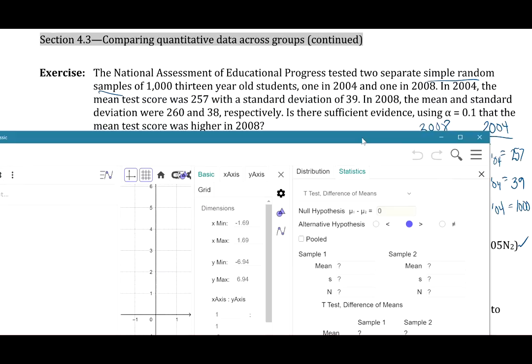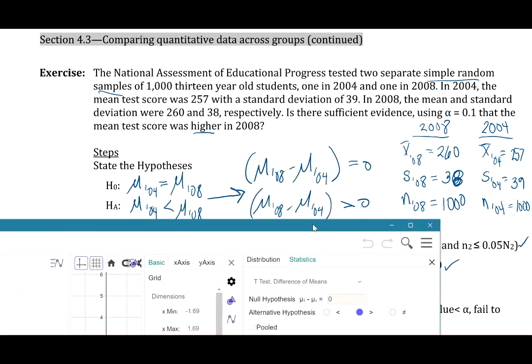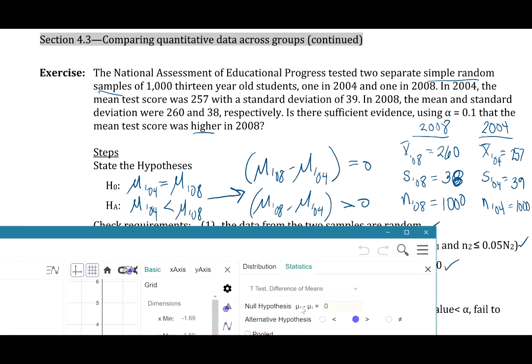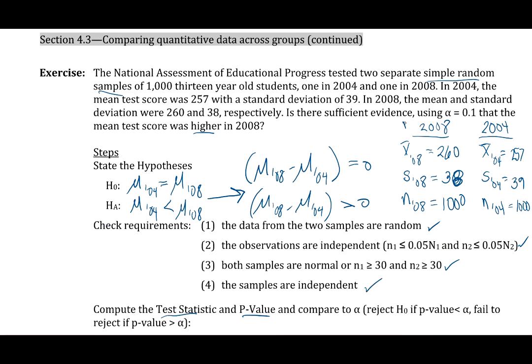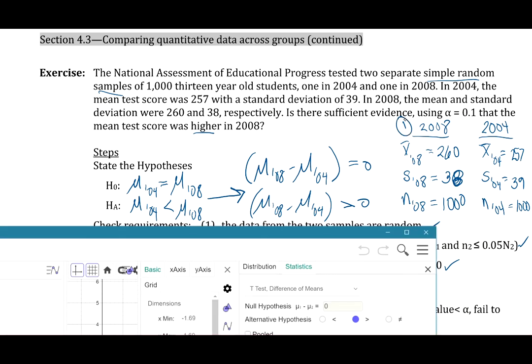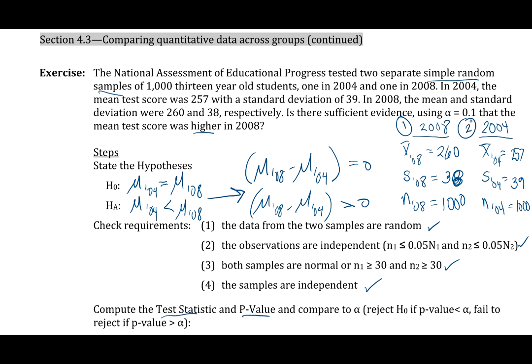Notice that the direction we wrote our hypotheses here, we're using one to be 2008 in GeoGebra, and then two, the second one there, is 2004. And I usually write those down so I can keep track of which ones go where.